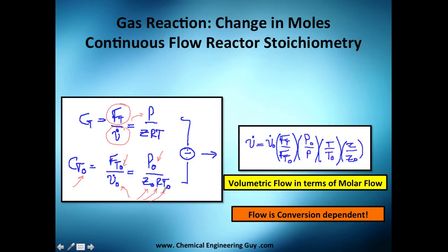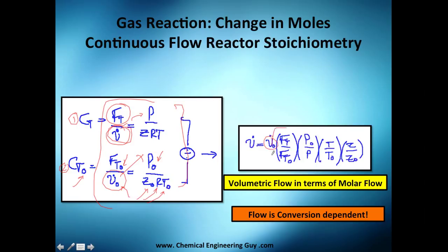The temperature must be the initial temperature at the start. So you have equation one and equation two — divide them. Taking away v0, you get that the volumetric flow rate v equals the initial volumetric flow rate v0 times a factor that accounts for how the total flow F_T changes, how pressure changes, how temperature changes, and how the compressibility factor z changes.